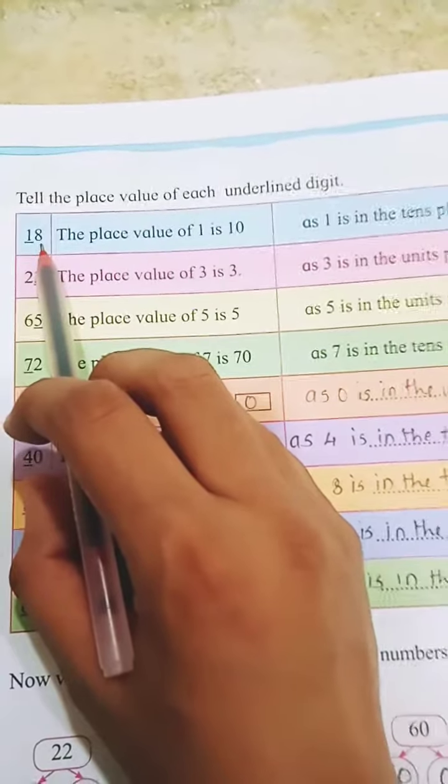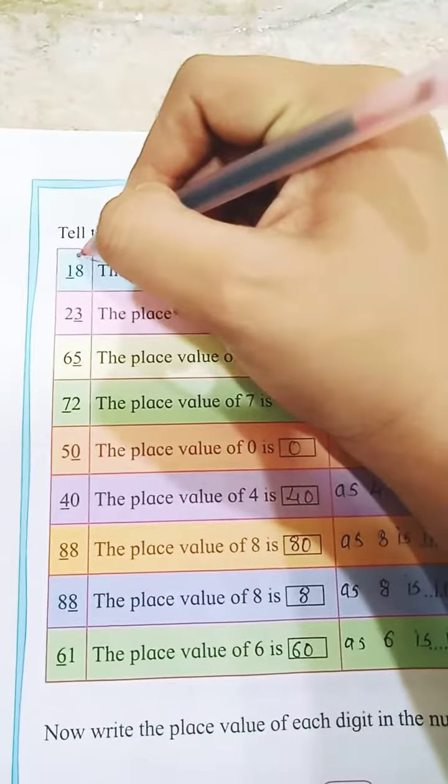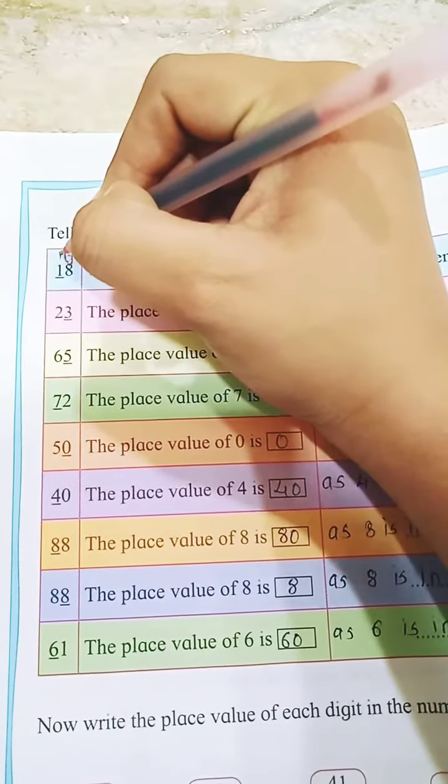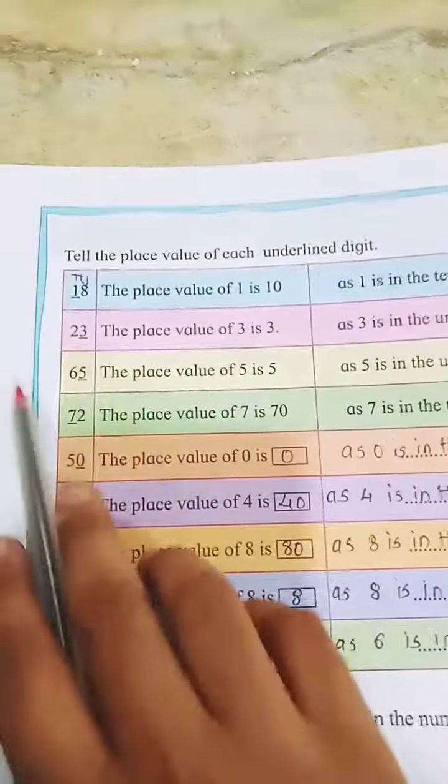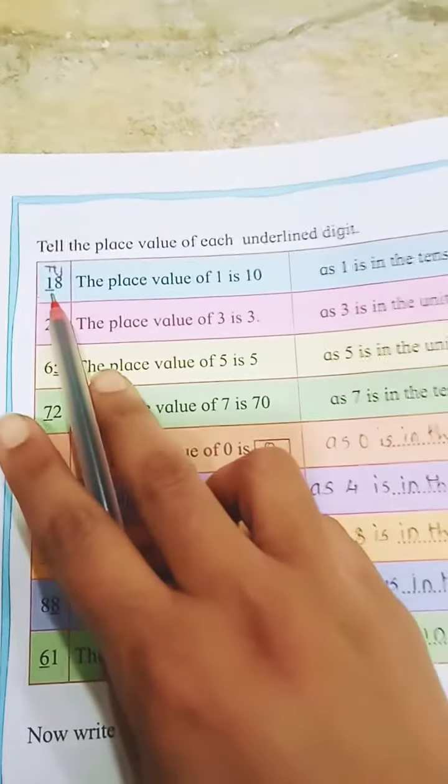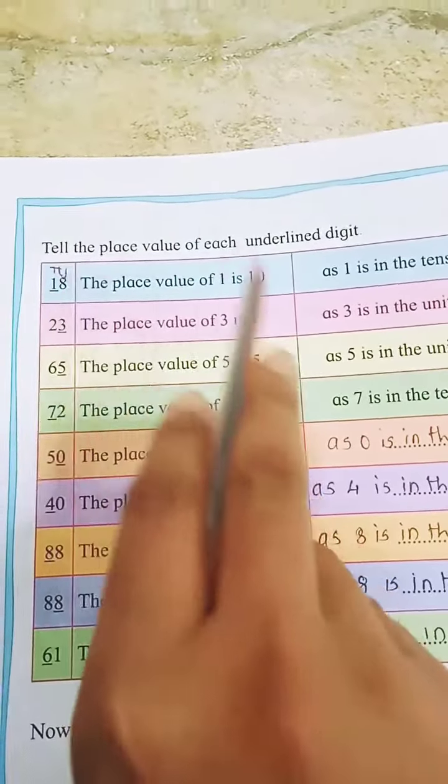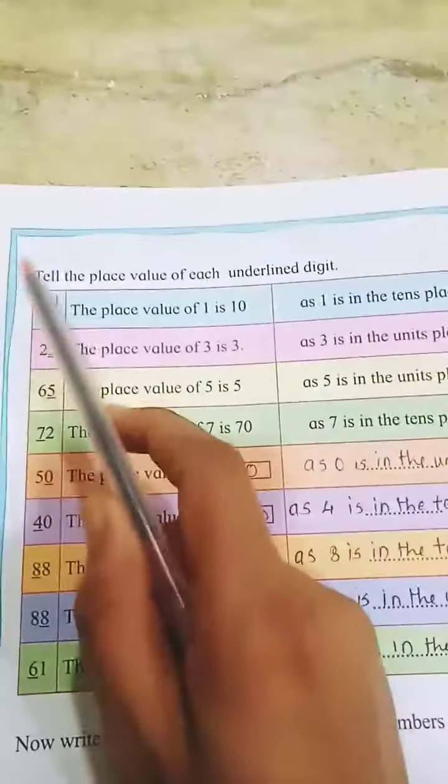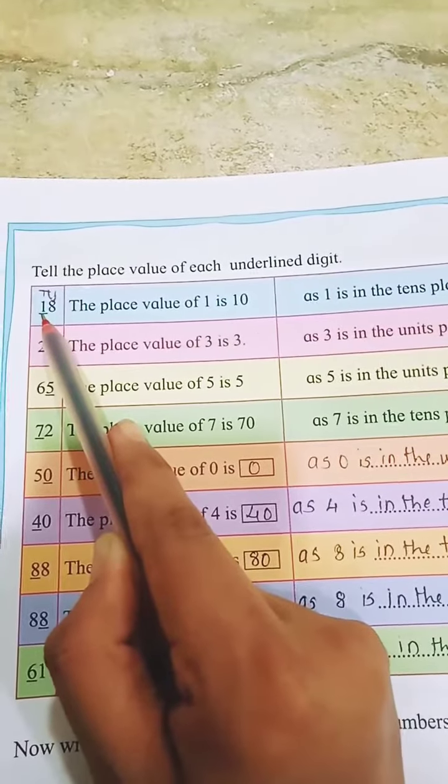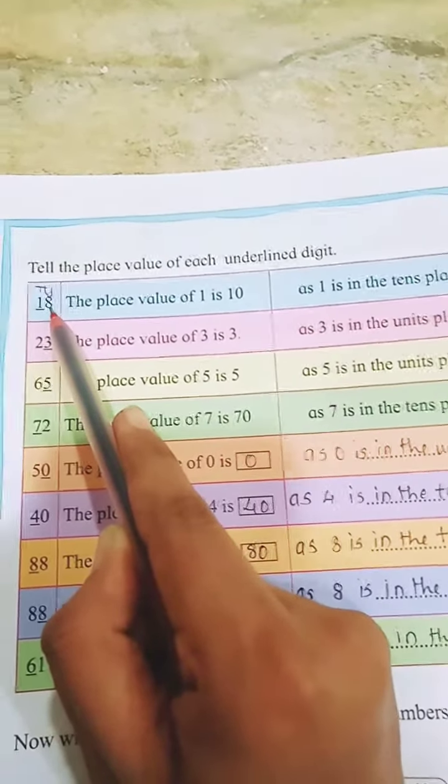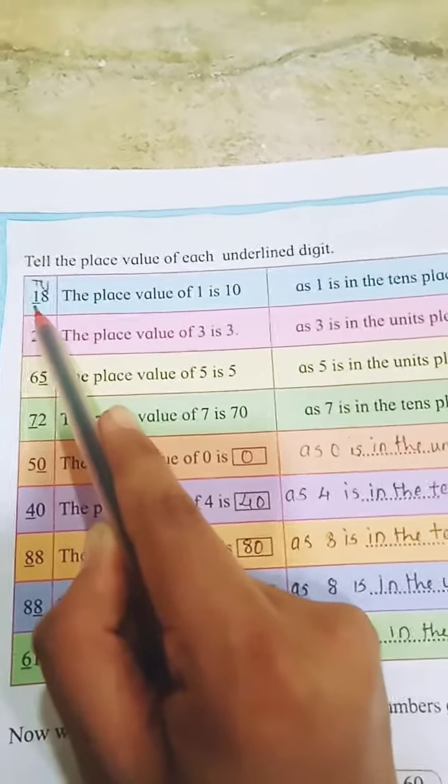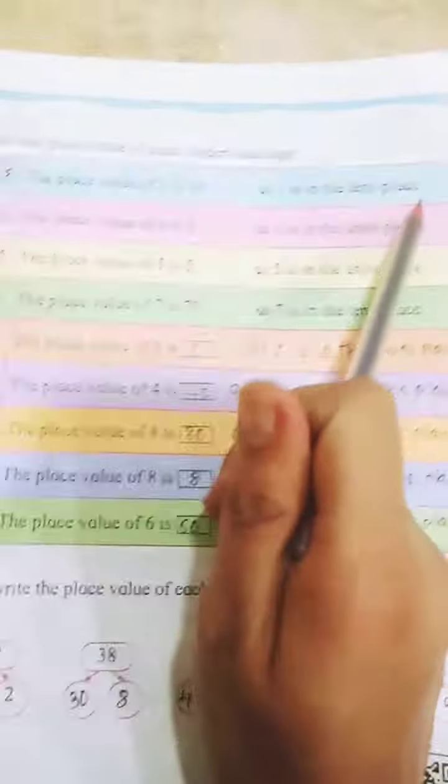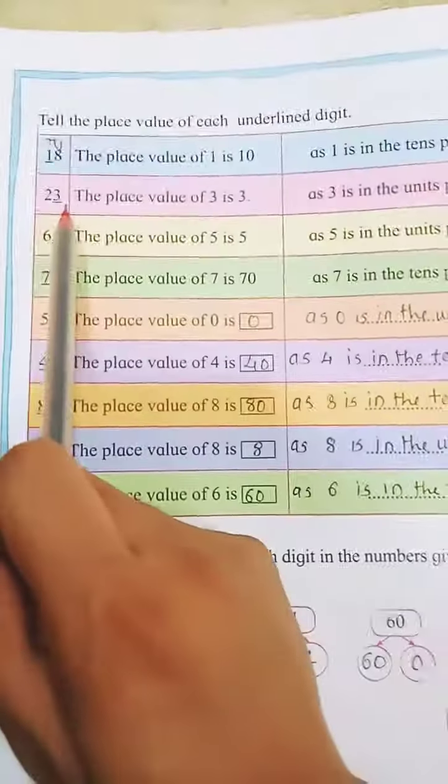8 is at unit's place and 1 is at 10's place. So the place value of 1 is 10, as 1 is in the 10's place. And 8 is at which place? Unit's place. So place value of 1 is 10, as 1 is in the 10's place. Second one.